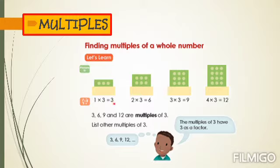Then the other one, 2 times 3 equals 6, 3 times 3 equals 9, and the last one is 4 times 3 equals 12. As you see here, 3, 6, 9, and 12 are multiples of 3.